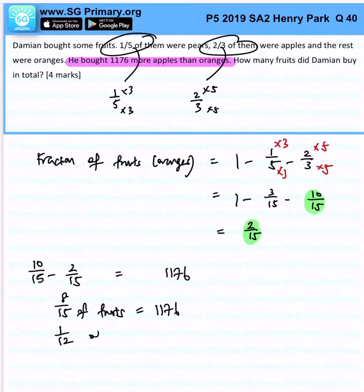1 over 15 of fruits is 1,176 divided by 8. That will give us 147.